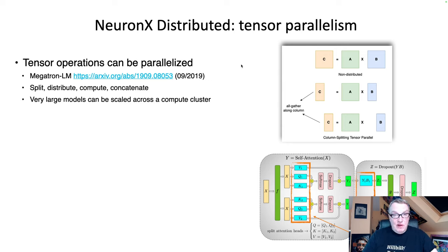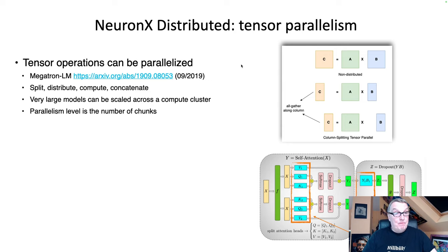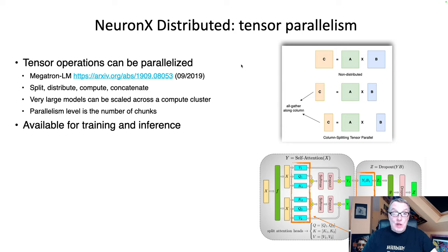The benefit of tensor parallelism is reduced memory usage on each device — we're not loading the full model, only chunks of certain tensors, saving memory. This means we can work with very large models that wouldn't fit on a single compute device. We can shard those very large models across multiple devices and still be able to train them. The tensor parallelism level is the number of chunks we build — in this example, two-way parallelism. It also works for inference, not just training.